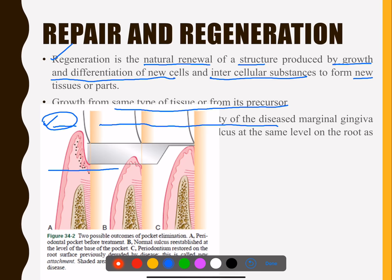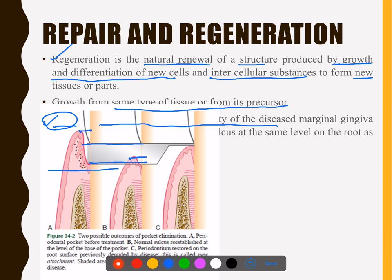There are two possible outcomes. In the first case, after treatment, the sulcus is reduced and still healthy — that means repair, healed but with a scar. In the second case, there is well-adapted new formation of connective tissue fibers almost to the level of the cementum — that is regeneration. This is our hero; this is what we aim for.